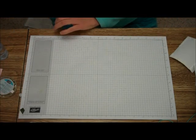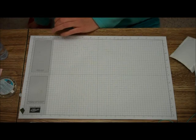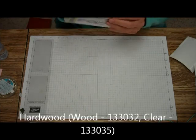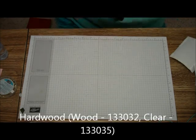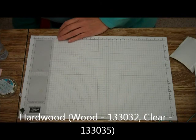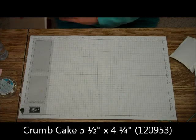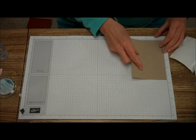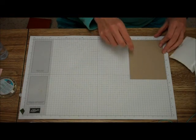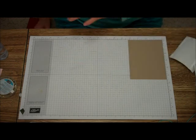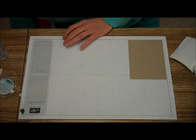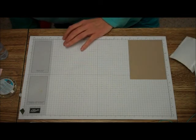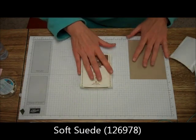So what you're going to need is the stamp set hardwood, some crumb cake cardstock five and a half by four and a quarter, and for ink I'm going to use soft suede.